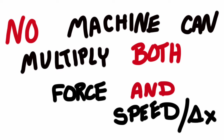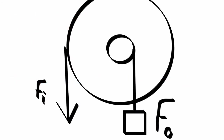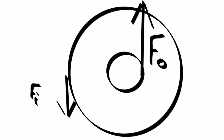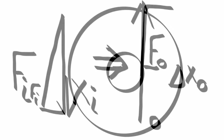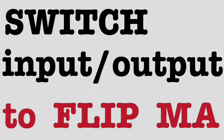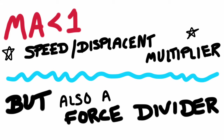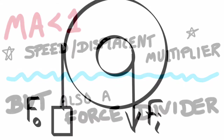Summary: no machine can multiply both force and speed and displacement — it's got to multiply one or the other. Mechanical advantage is greater than 1 if it's a force multiplier, but unfortunately it's a speed displacement divider. The input force is on the outside, the larger diameter; output force is on the inner diameter — force multiplier. Or, if you switch the input and the output, you get a mechanical advantage less than one: it's a speed displacement multiplier, but unfortunately a force divider.